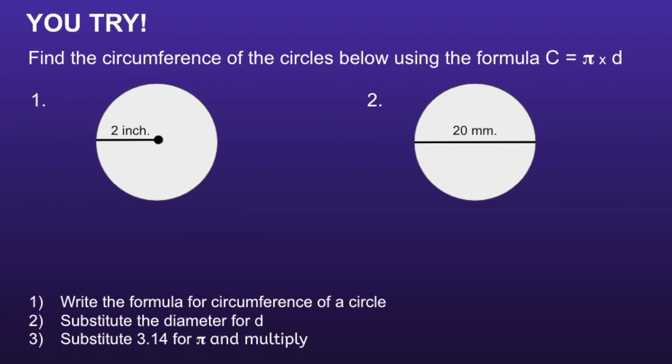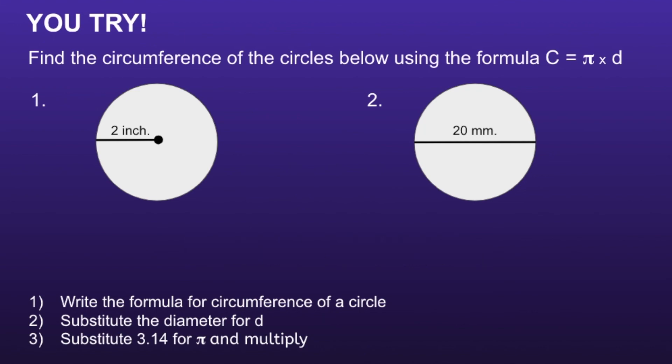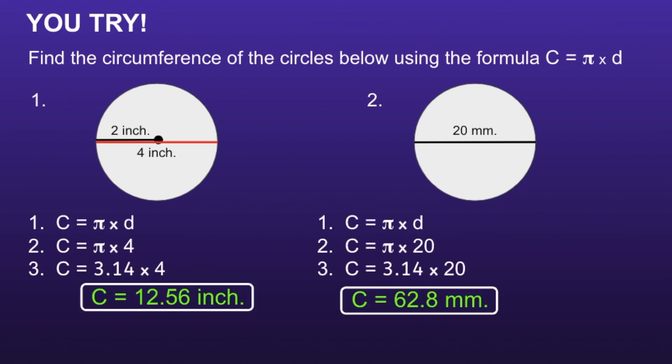Now I have two more problems for you to try. Find the circumference of the circles below using the formula C equals pi times d. I would recommend you pause the video now, solve, and then resume when you're ready to check your solutions. The circumference for number 1 is 12.56 inches, and the circumference for number 2 is 62.8 millimeters. If you had either of these incorrect, I would recommend you pause, review your work, and see if you can find your mistake.